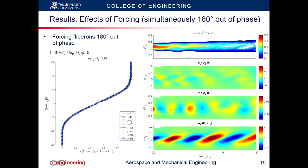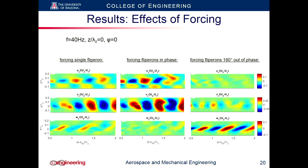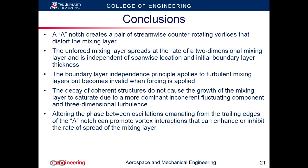When forcing 180 degrees out of phase, we don't see distortions in the phase-locked velocity profile because the streamwise velocity fluctuations are now suppressed. We do see vertical fluctuations, but the wall-normal w component has been increased. Comparing all cases, what we see is constructive interference from forcing in phase and destructive interference from forcing 180 degrees out of phase, which is what causes the growth rate to be affected.